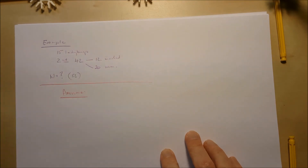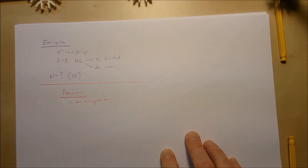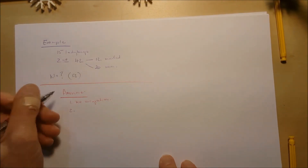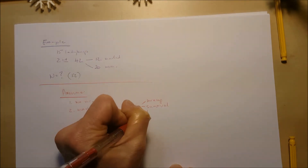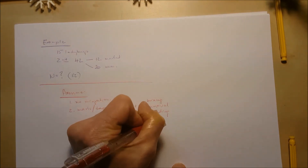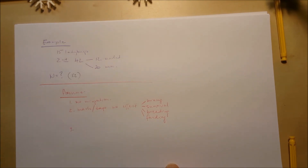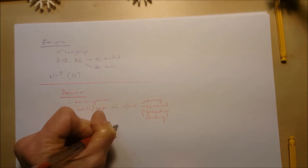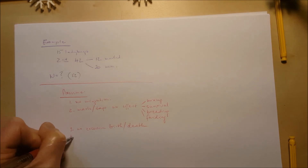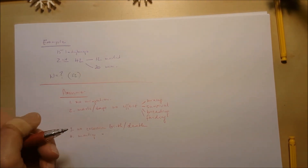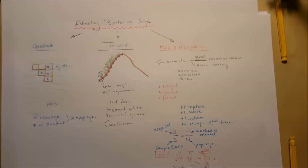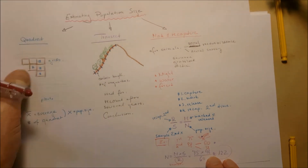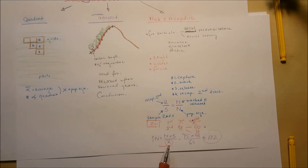This is a good method for estimating population size, but we have to assume: first, no migration, immigration, or emigration happens in that area between the two captures; second, the tags do not affect survivorship, will not fade or fall off, and allow organisms to breed and mix randomly; third, no excessive birth or death rate occurs during that period; and fourth, the marked organisms mix randomly with other organisms in the population. Also, if R — the recaptured marked amount — is very small, the estimated population will be large, which makes sense.